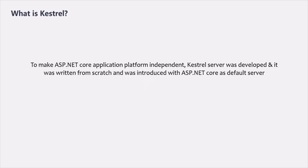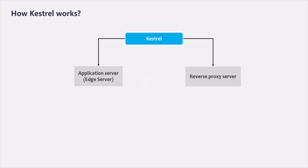Kestrel is cross-platform, lightweight, and super fast. Kestrel can be used in two ways: as an application server (also called an edge server), or together with a reverse proxy server. When developing an ASP.NET Core application, the server does not have to do much except receive requests and send responses, and Kestrel is quite good at that.